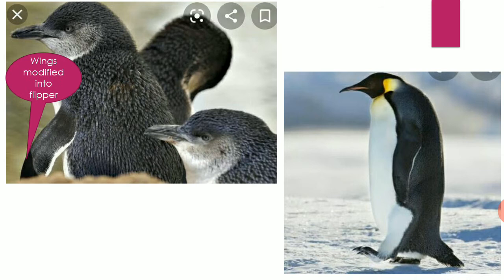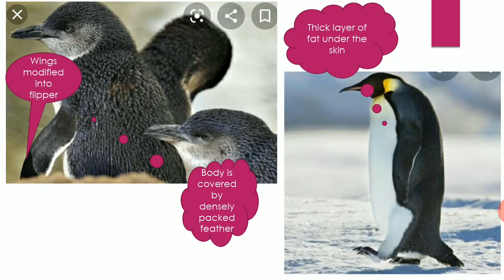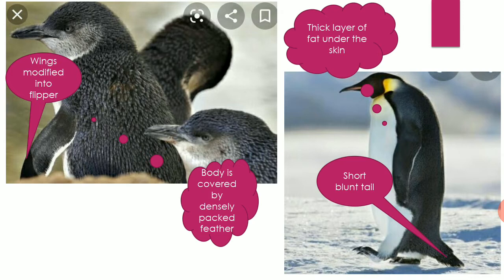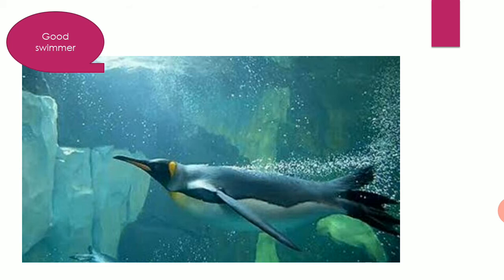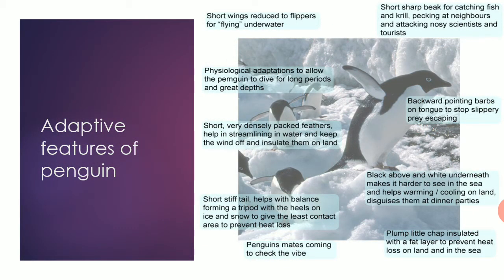The next feature is the presence of flippers, which are modified wings, and these flippers help penguins swim. They also have very densely packed feathers which keep their body warm, and a thick layer of fat under the skin which also keeps them warm. A very short blunt tail helps keep their body balanced during swimming and walking. Apart from this, the penguin is also a very good swimmer due to its streamlined body, webbed feet, short tail, and flippers. These are the adaptive features of the penguin, summarized in a gist diagram.